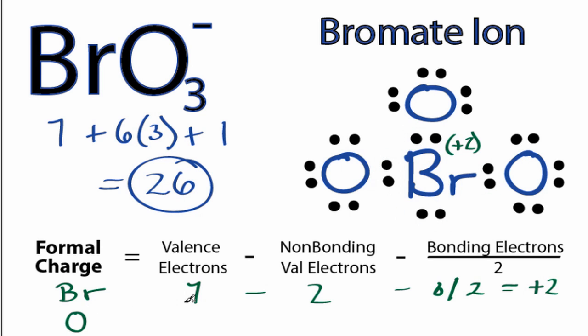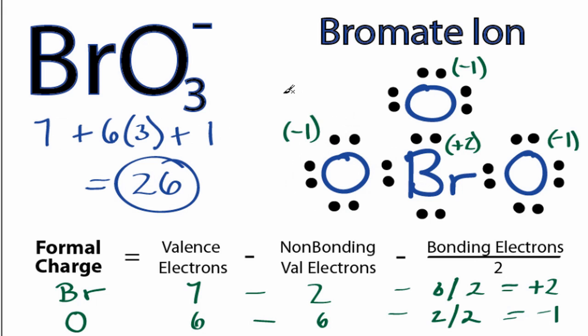For the Oxygen, and each of the Oxygens is the same, so we'll just do 1. We have 6 valence electrons on the periodic table, minus nonbonding, 6, minus the bonding, 2 divided by 2. So we have a negative 1 formal charge on each of the Oxygens. We'd like our formal charges to be as close to 0 as possible.